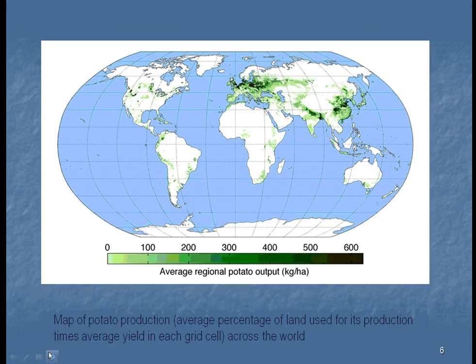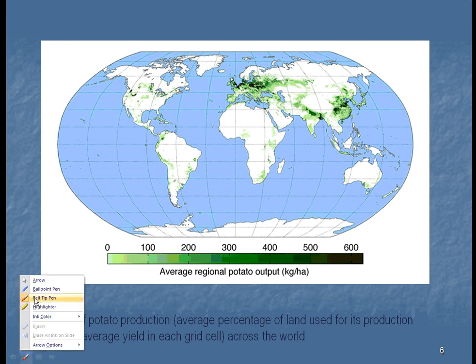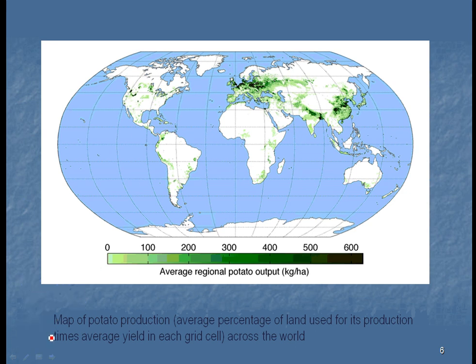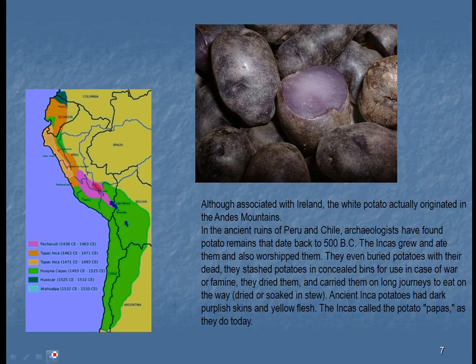This is a map of the world showing where potatoes are being produced in large quantities. Looking at the United States, there is some production, but the darker colors — indicating higher production — are concentrated in Europe, and surprisingly also in China and India. We tend to think of China and India as places where people eat a lot of rice, but there is actually an enormous amount of potato production there.